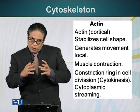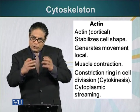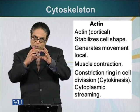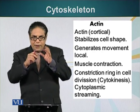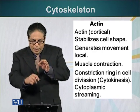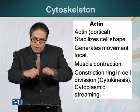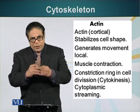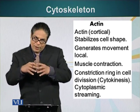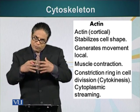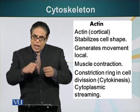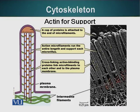Actin is also responsible for splitting one cell into two. It is a ring of actin filaments that forms in the center of a dividing cell. Think of a ball made of dough — if you run a string around it and then tighten the string, the ball of dough will split into two balls. This is basically what happens after chromosomes have separated: a ring of actin filaments forms, and when it contracts, it splits the cell into two.